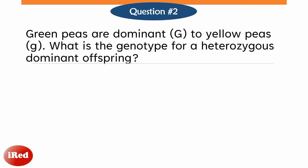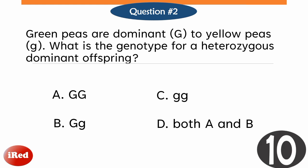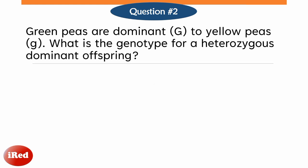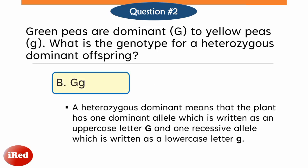What is a genotype for a heterozygous dominant offspring? The correct answer is letter B. A heterozygous dominant means the plant has one dominant allele, written as an uppercase letter G, and one recessive allele, written as a lowercase letter G.